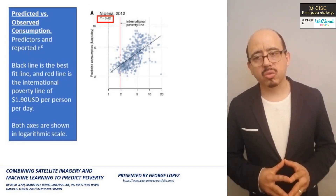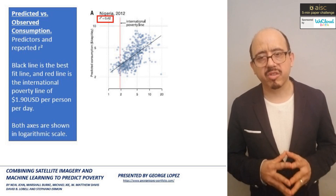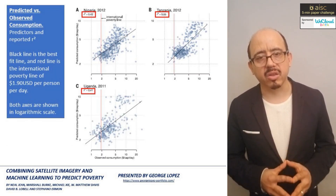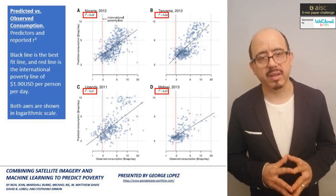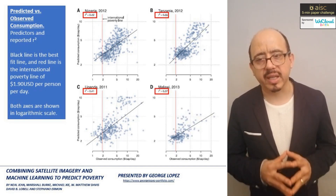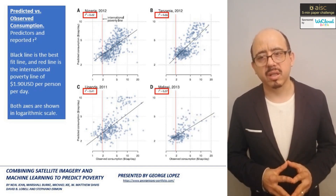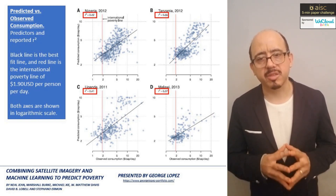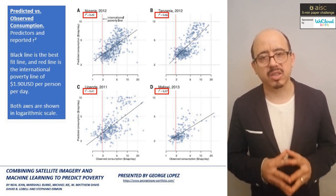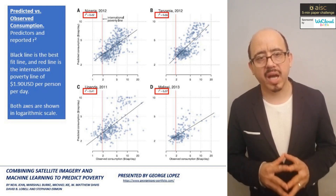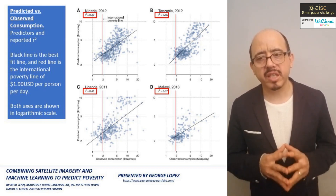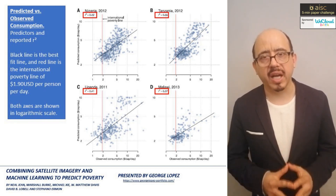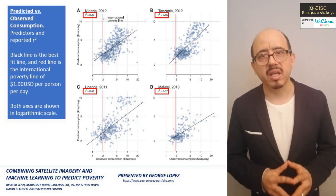The authors claim that their transfer learning model can predict their poverty indicators with high accuracy. They handle two indicators: consumption expenditure and asset wealth, where they claim having achieved variability explanations of 55% and 59% respectively.